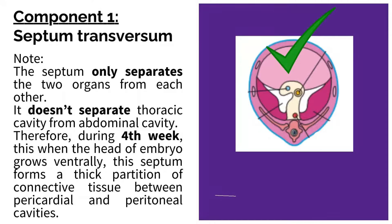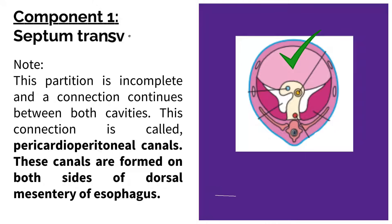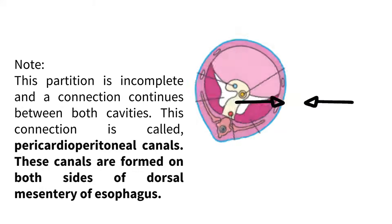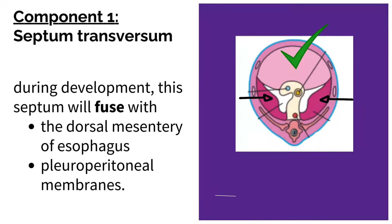During the fourth week, when the head of the embryo grows ventrally, the septum forms a thick partition of connective tissue between the pericardial and peritoneal cavities. This partition is incomplete, and a connection continues between both cavities. This connection is called the pericardial peritoneal canals, which are formed on both sides of the dorsal mesenteria esophagus. During development, this septum will fuse with the dorsal mesenteria esophagus and pleuroperitoneal membranes.